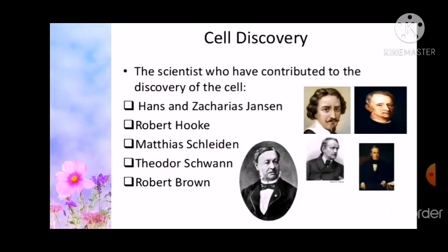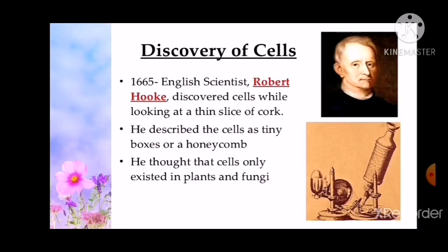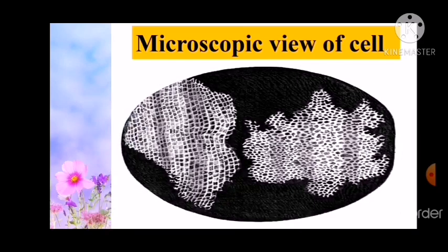Discovery of cell. The scientists who have contributed to the discovery of the cell include Hans and Zacharias Janssen, Robert Hooke, Matthew Schleiden, Theodore Schwann, and Robert Brown. In 1665, English scientist Robert Hooke discovered cells while looking at a thin slice of cork. He described the cells as tiny boxes or a honeycomb. He thought that cells only existed in plants and fungi. In this slide, you can see the microscopic view of the cell as observed by Robert Hooke.